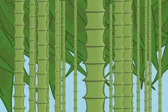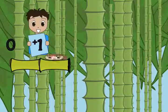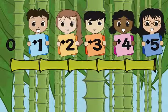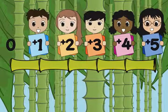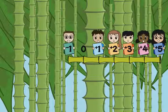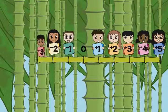The point labeled zero is called the origin. Numbers to the right of zero are greater than zero and are positive numbers. Numbers to the left are less than zero and are negative numbers.